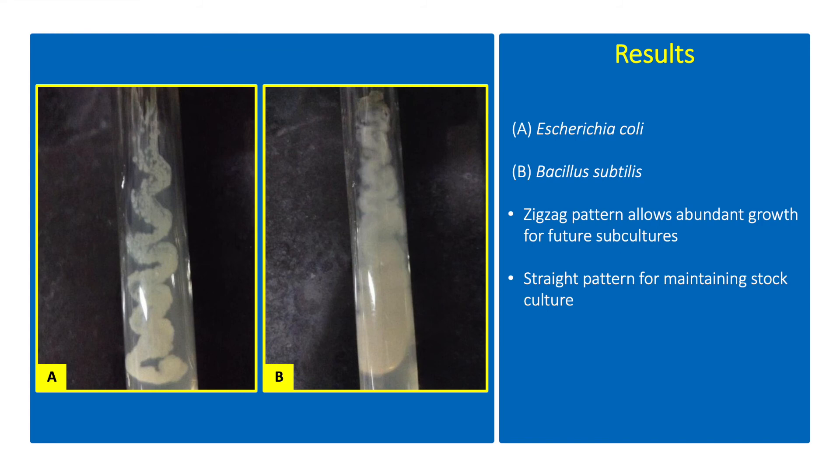These are the results showing the zigzag growth of E. coli and B. subtilis on NA slants. Zigzag pattern allows for abundant growth ideal for subculturing. A straight pattern is ideal for maintaining stock culture.